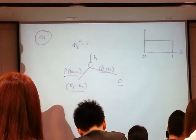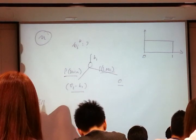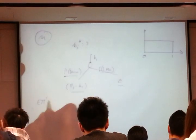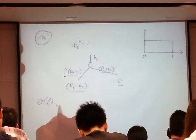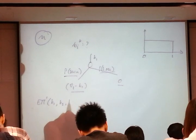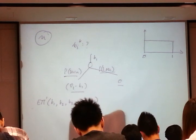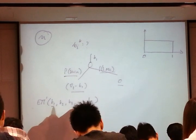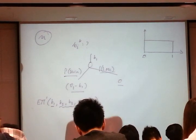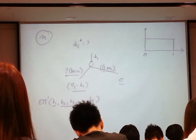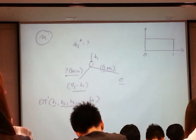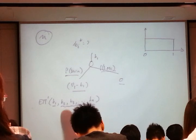So now, let me write down my expected payoff function. The expected payoff to bidder 1 of bidding B1, where the other guys are bidding B2, B3, up to BN. Remember, this is a game. My payoff depends not only on what I do, but what the other guys do.